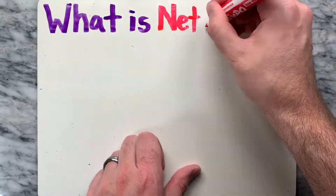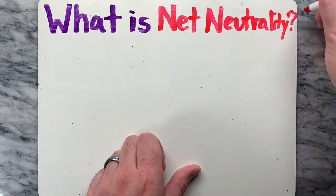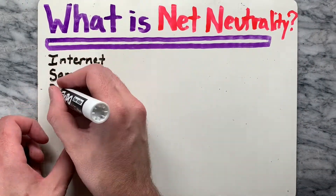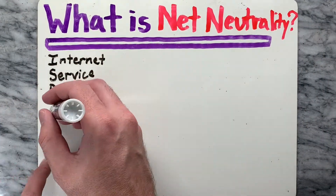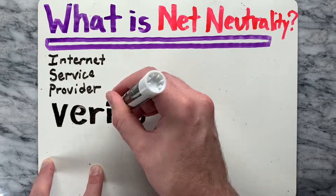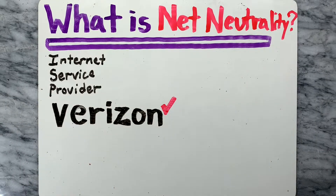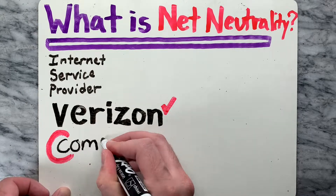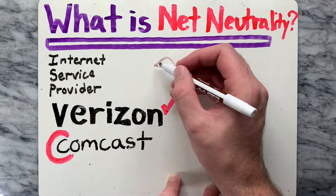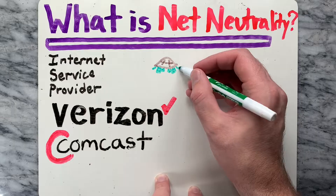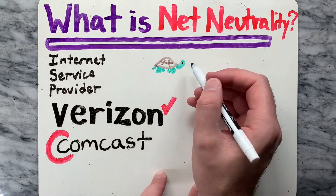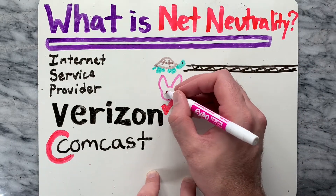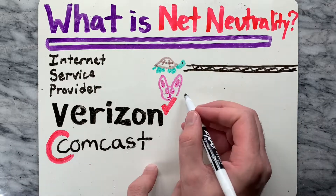So first, what is net neutrality? Essentially, net neutrality refers to the policy of prohibiting an internet service provider, or ISP, like Verizon or Comcast, from giving special treatment of any kind — either slowing down or speeding up transmission of any specific internet traffic. Another way of stating it is requiring internet service providers to deliver content at the same speed regardless of its source.